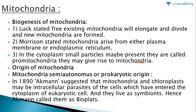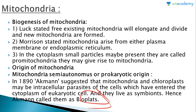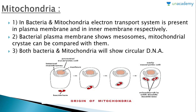Next we will study the origin of mitochondria. Mitochondria have a semi-autonomous or prokaryotic origin. In the 1890s, Ackmann suggested that mitochondria and chloroplasts may be intracellular parasites of cells which entered the cytoplasm of eukaryotic cells and live as symbionts — hence he called them bioplasts. His theory was based on observations: in bacteria, the electron transport system is present in the plasma membrane, and in mitochondria it is present in the inner membrane.